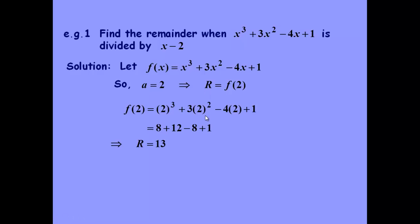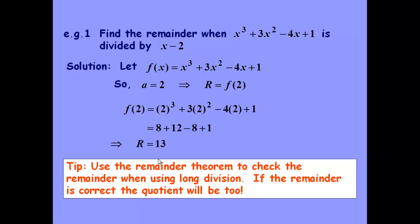We put our values for 2 in, for x. So we replace x's with 2's, and we end up with 13. So we end up with a remainder of 13.